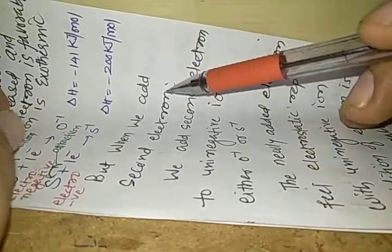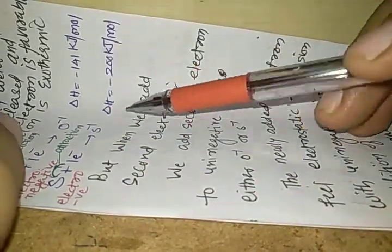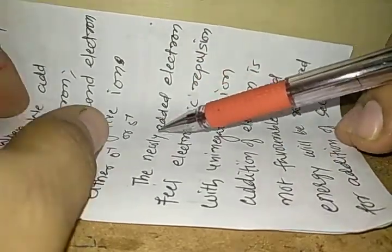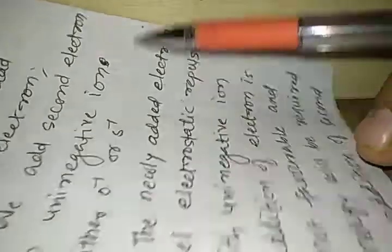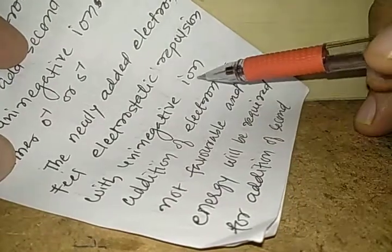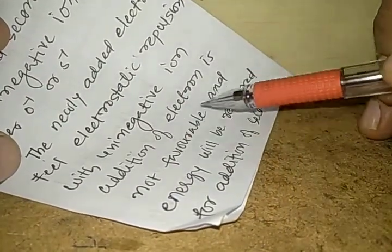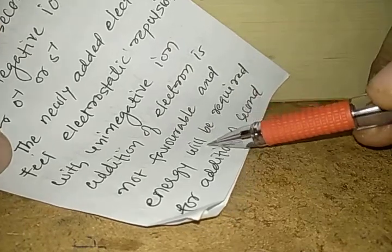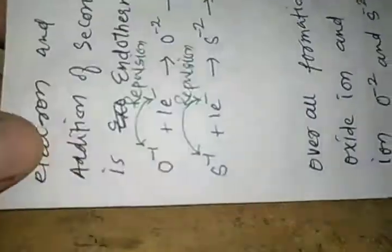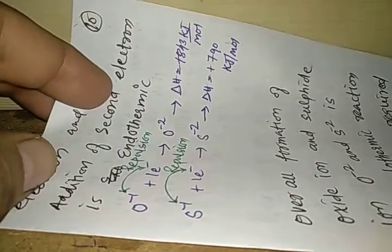But when we add the second electron, we add it to a uninegative ion. S minus 1 and O minus 1 are uninegative ions — they already have a negative charge on them and we add an extra electron to them. The newly added electron feels electrostatic repulsion with the uninegative ion. Thus addition of the electron is not favorable and energy will be required for addition of the second electron.